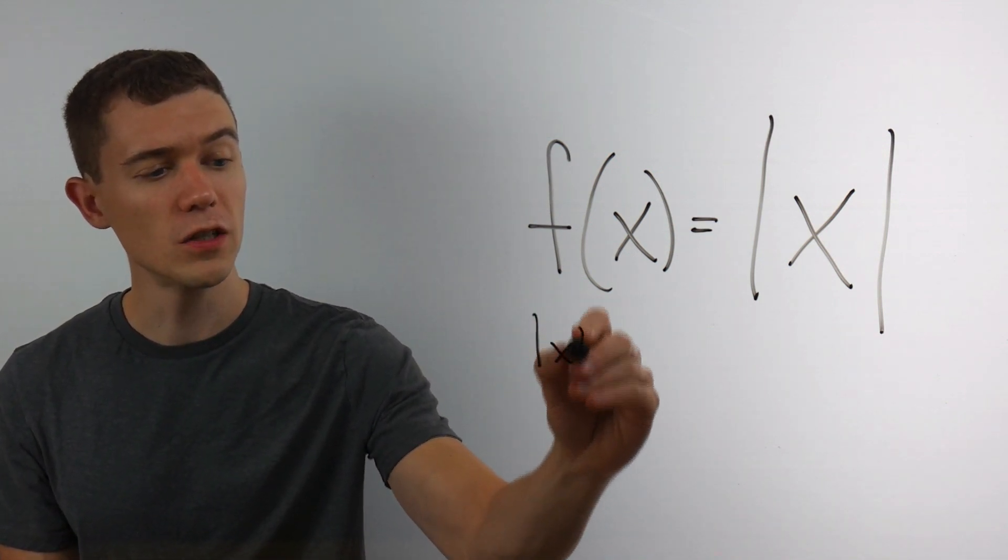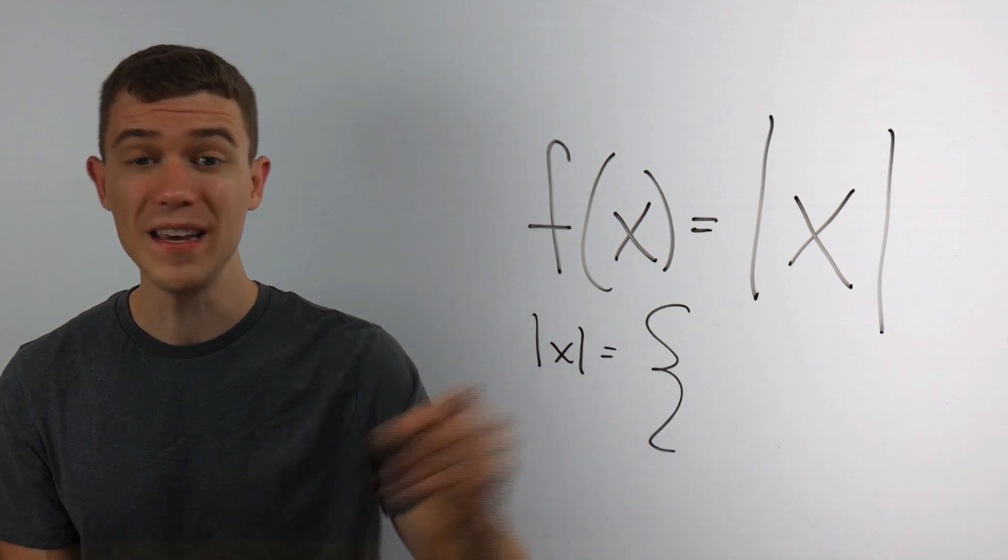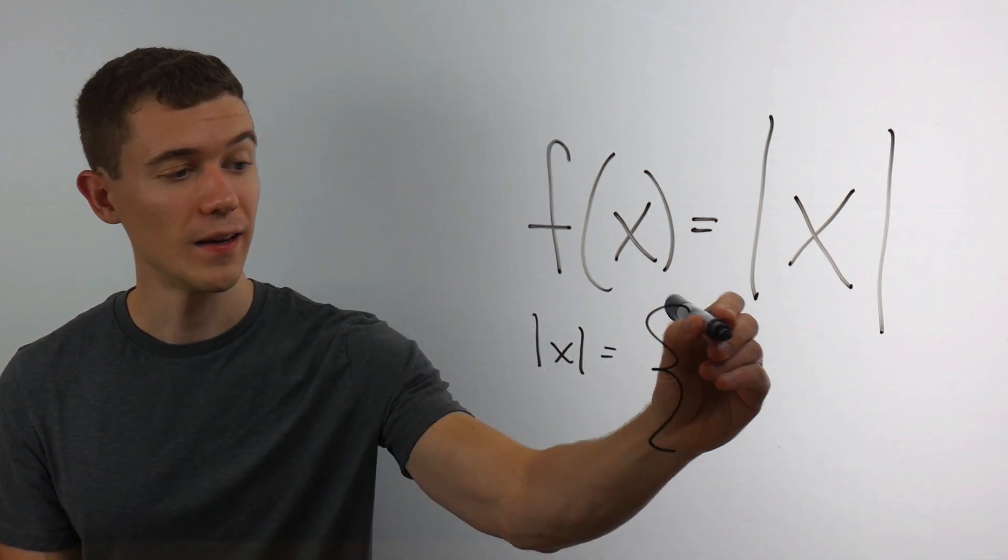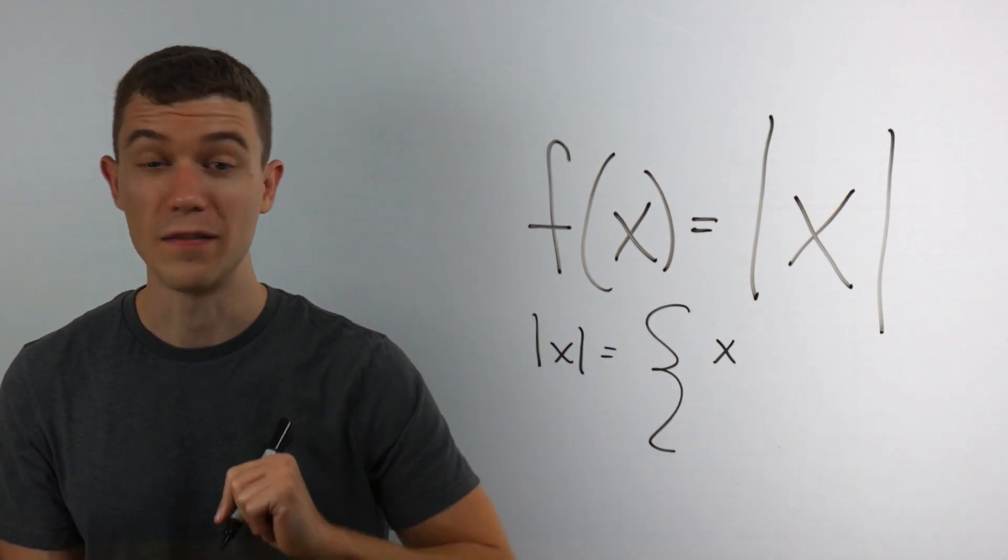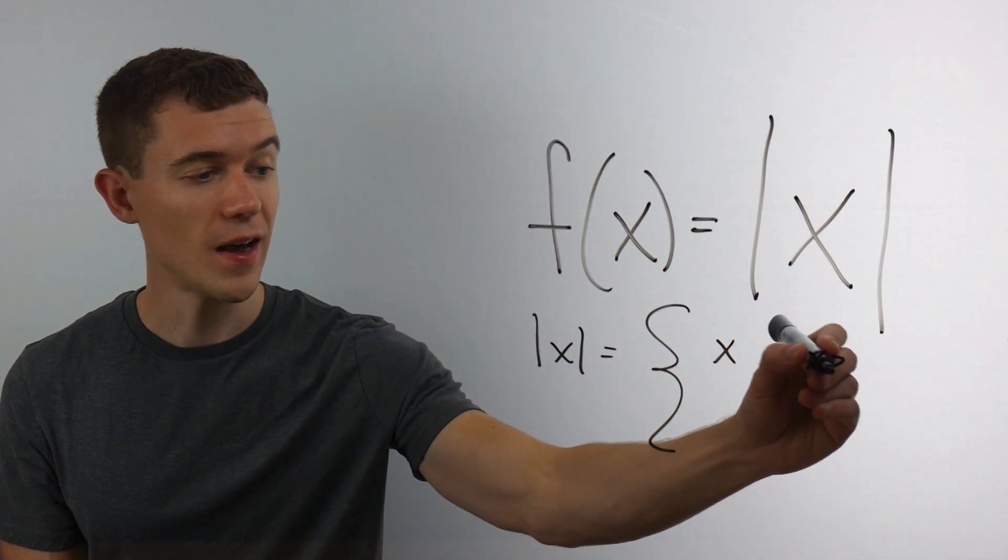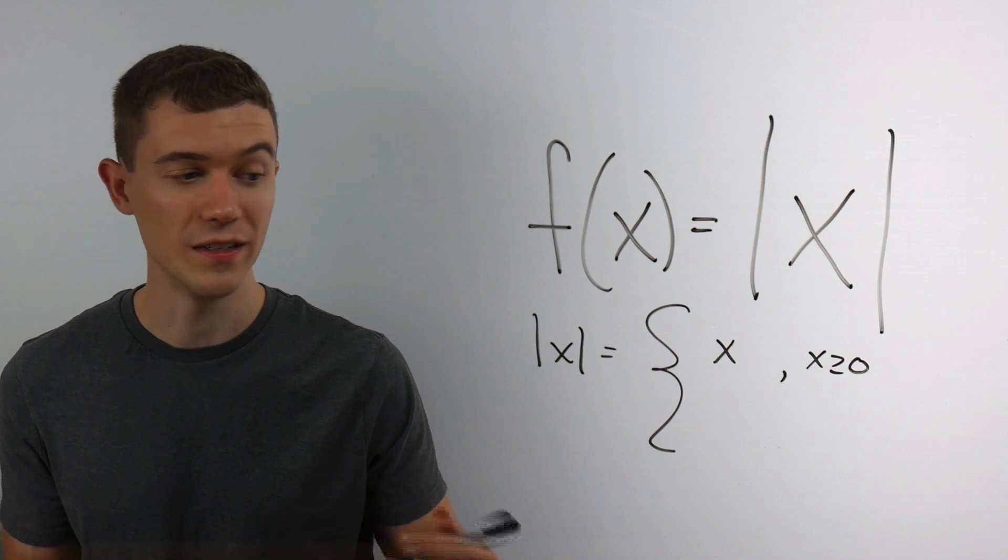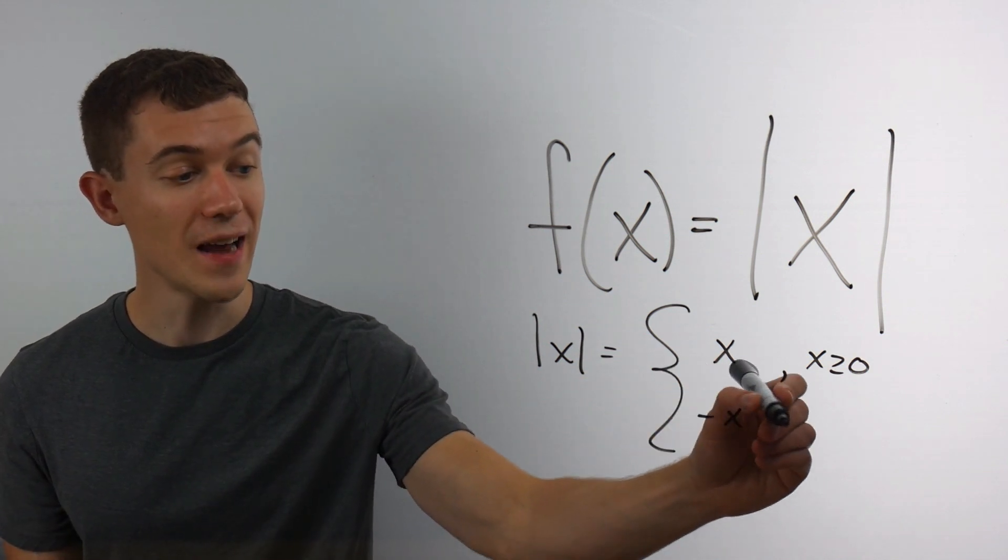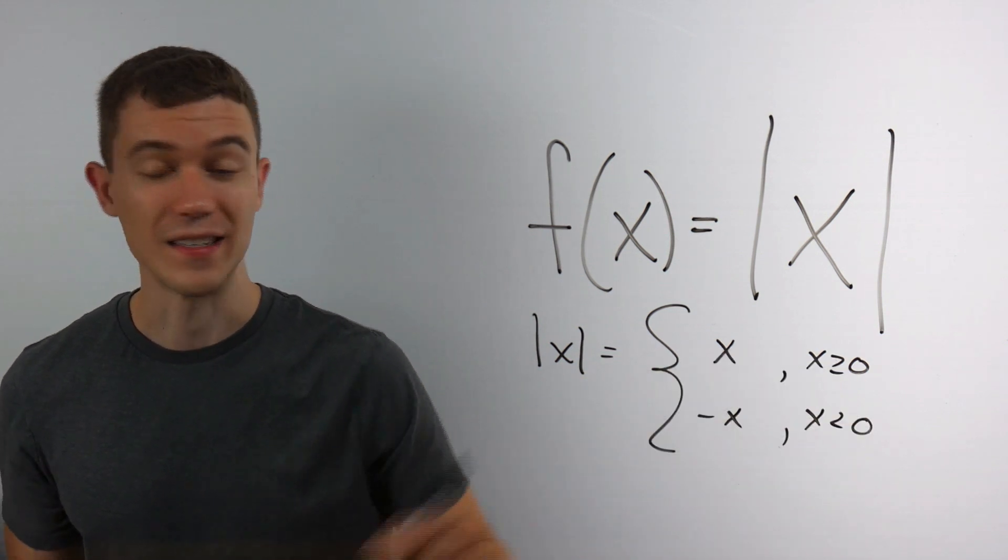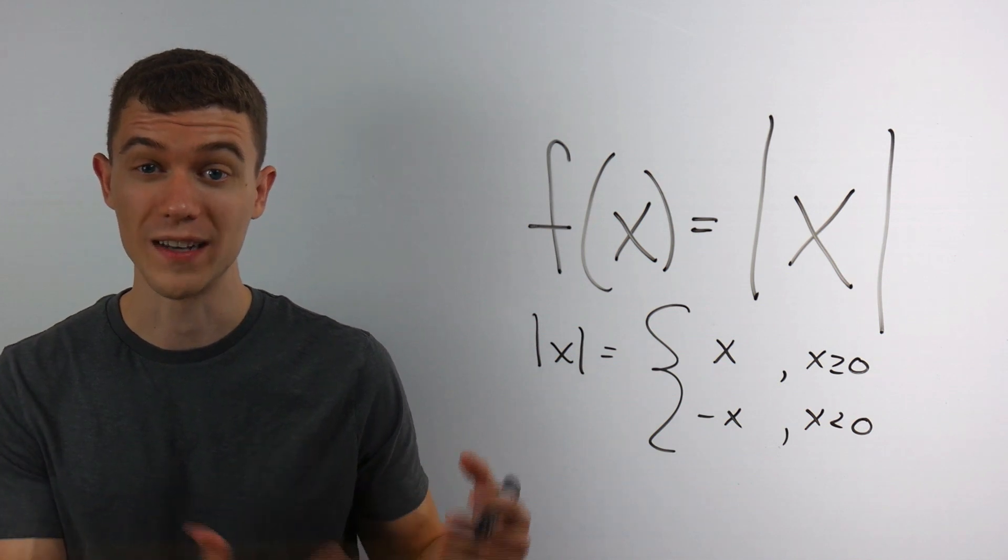That's because this function is defined as a piecewise function. It just outputs the value of x if x is already positive, if x is greater than or equal to 0. And it outputs negative x if x is less than 0, if x is negative.